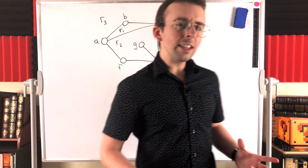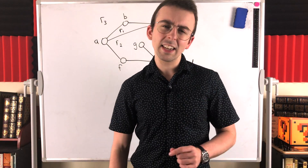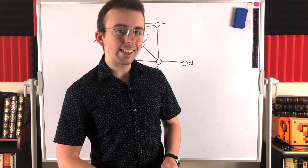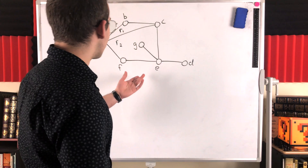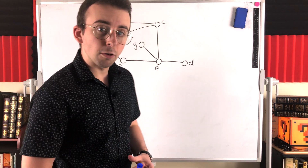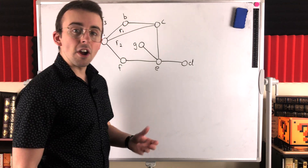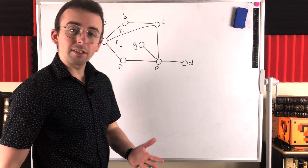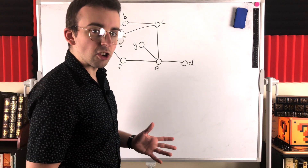Howdy folks. What is the degree of a region or a face in a plane graph? That's what we'll be going over in today's Wrath of Math lesson. Here we've got an example of a plane graph. Recall that a plane graph is a graph drawn in the plane with no edge crossings. Such a graph divides the plane into what are called faces or regions.